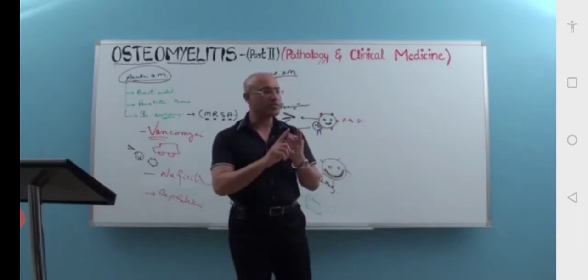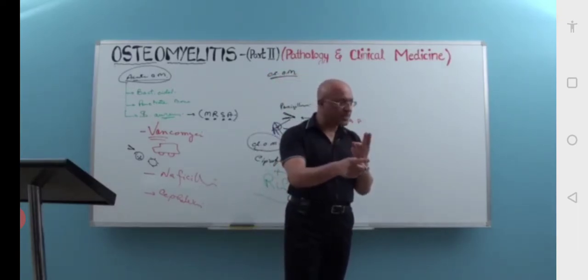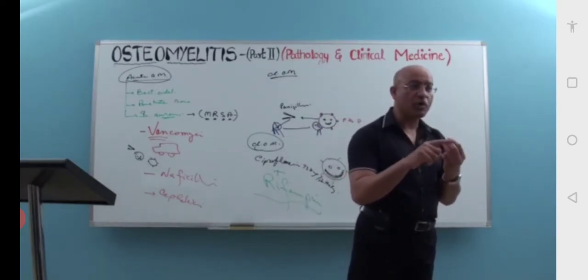Third thing: acute osteomyelitis. When you are choosing antibiotics, what are the features of those antibiotics? They must be bactericidal. Then they should be able to penetrate bones. And then they should be able to cover Staphylococcus aureus.